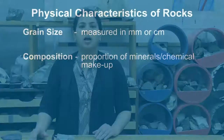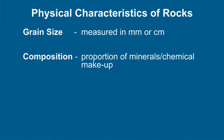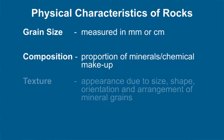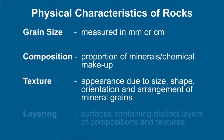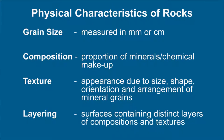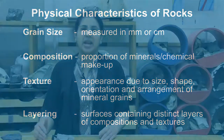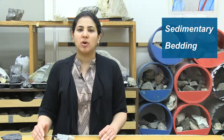Then comes composition. The term rock composition refers to the proportion of different chemicals making up the rock. Then is texture — the appearance of a rock that results from the size, shape, and arrangement of mineral grains. The last characteristic is layering. Some rock surfaces contain distinct layers defined by varied compositions and textures. For example, in sedimentary rocks, layering is referred to as bedding, while in metamorphic rocks it is called metamorphic foliation.